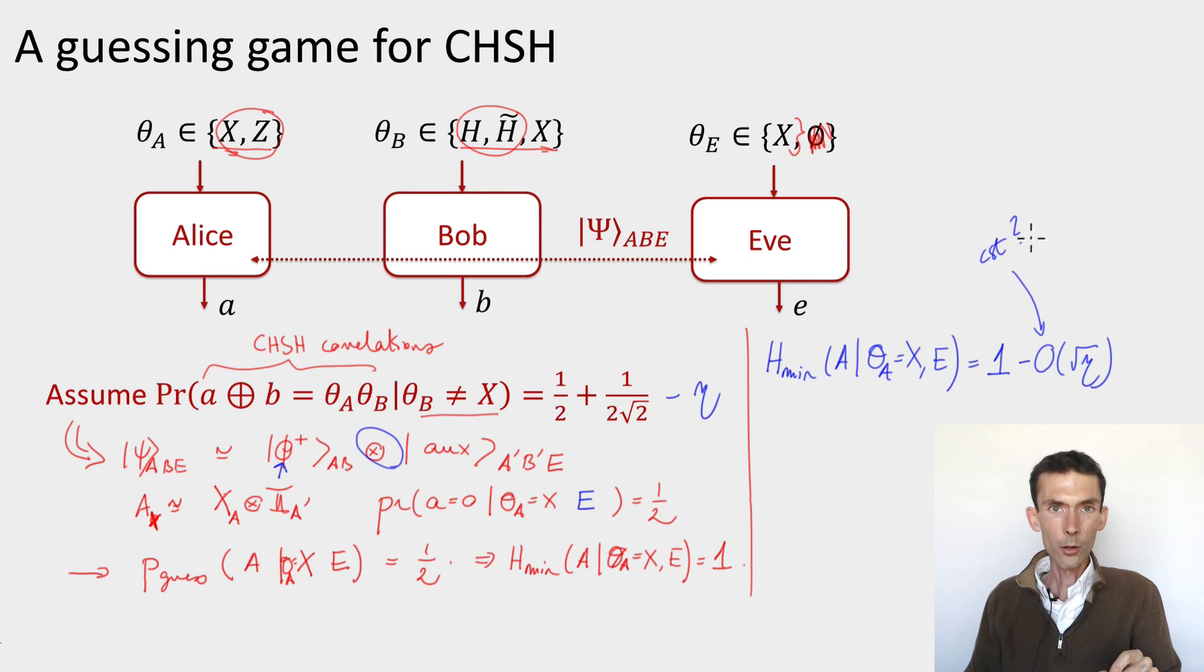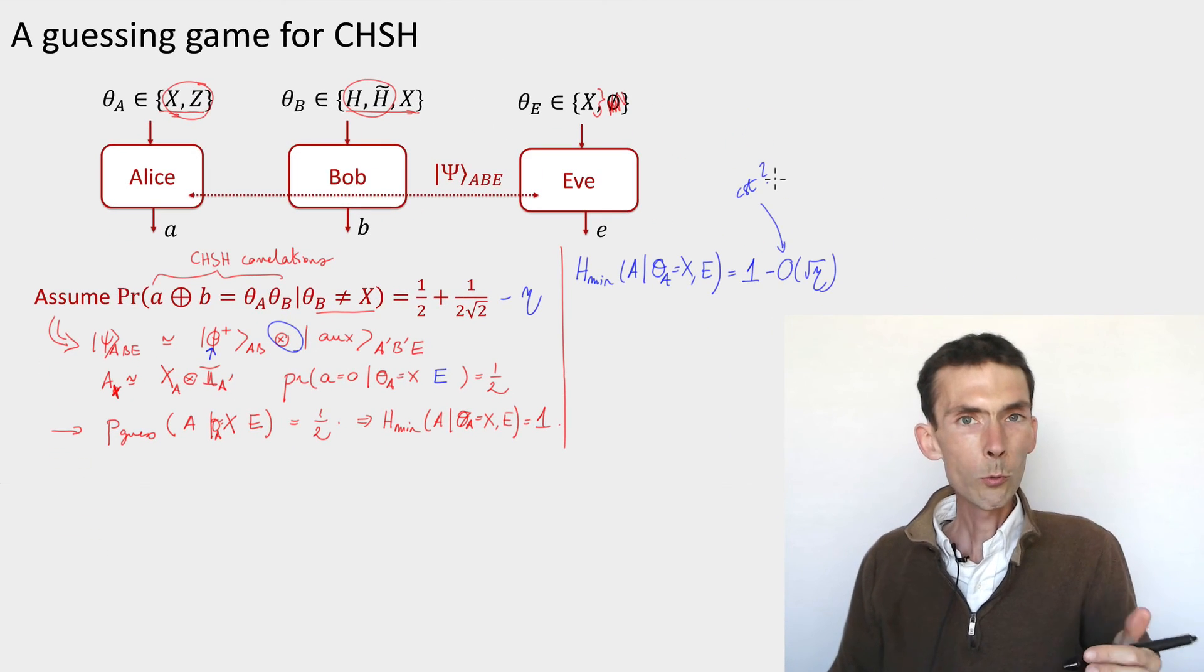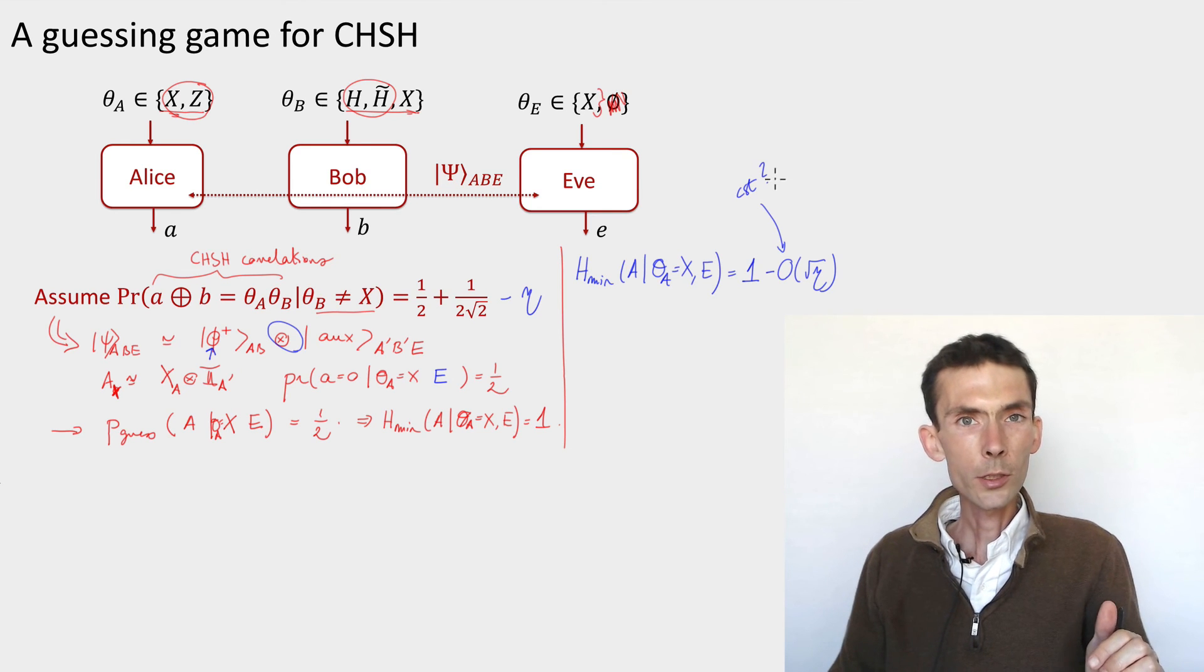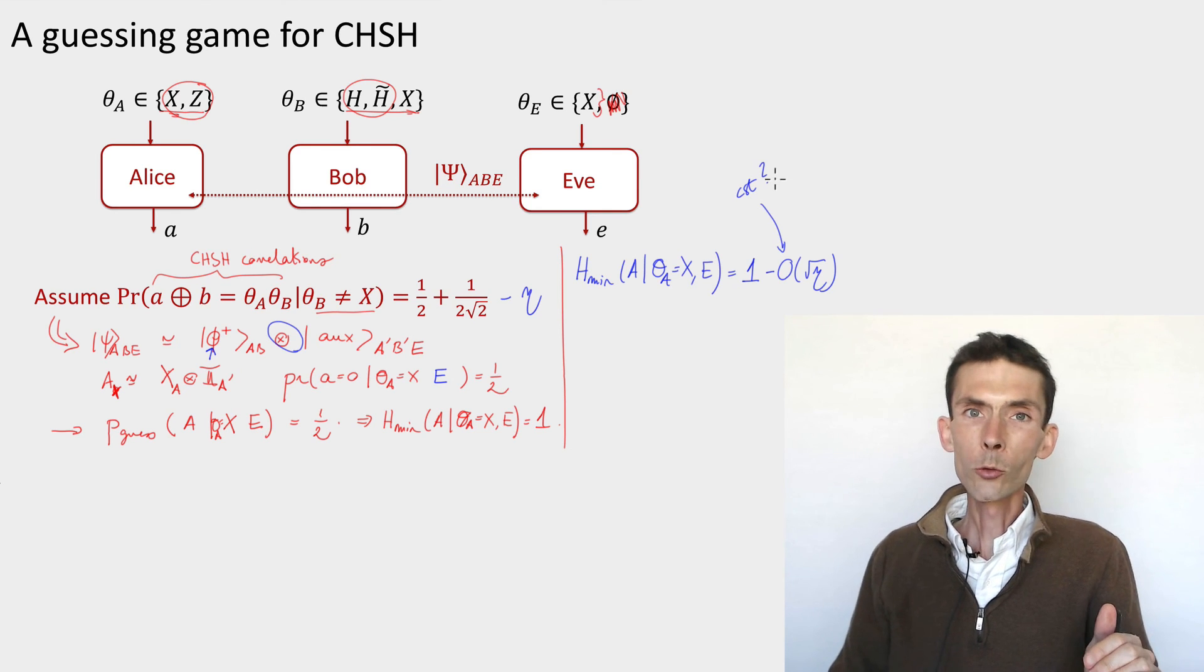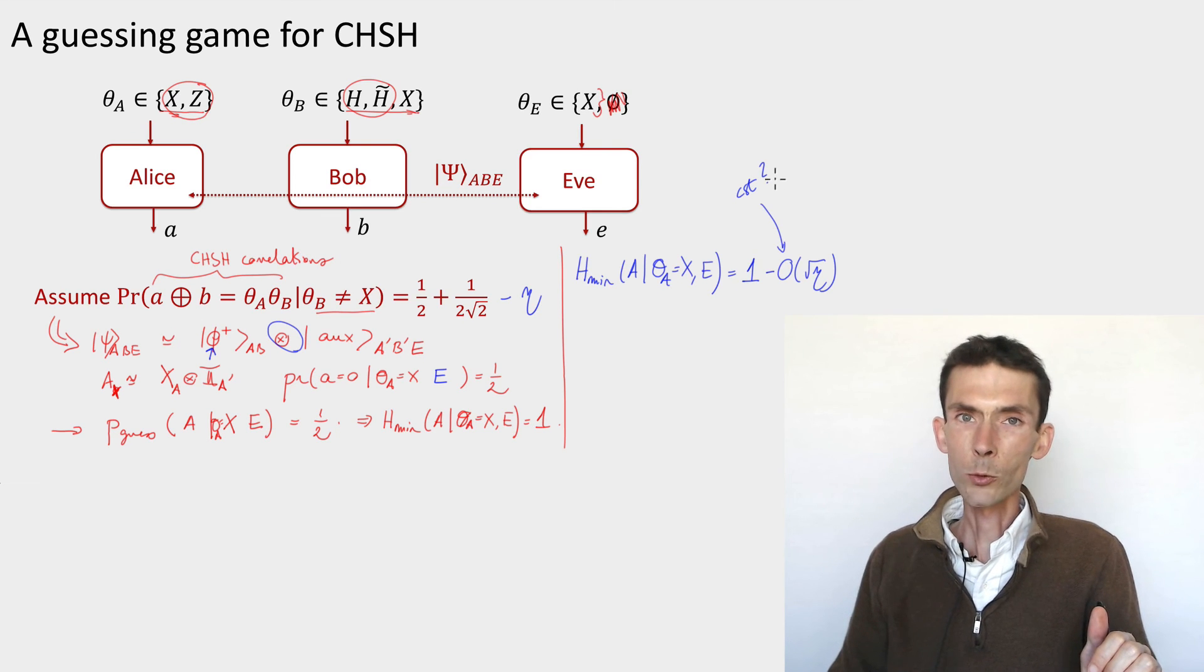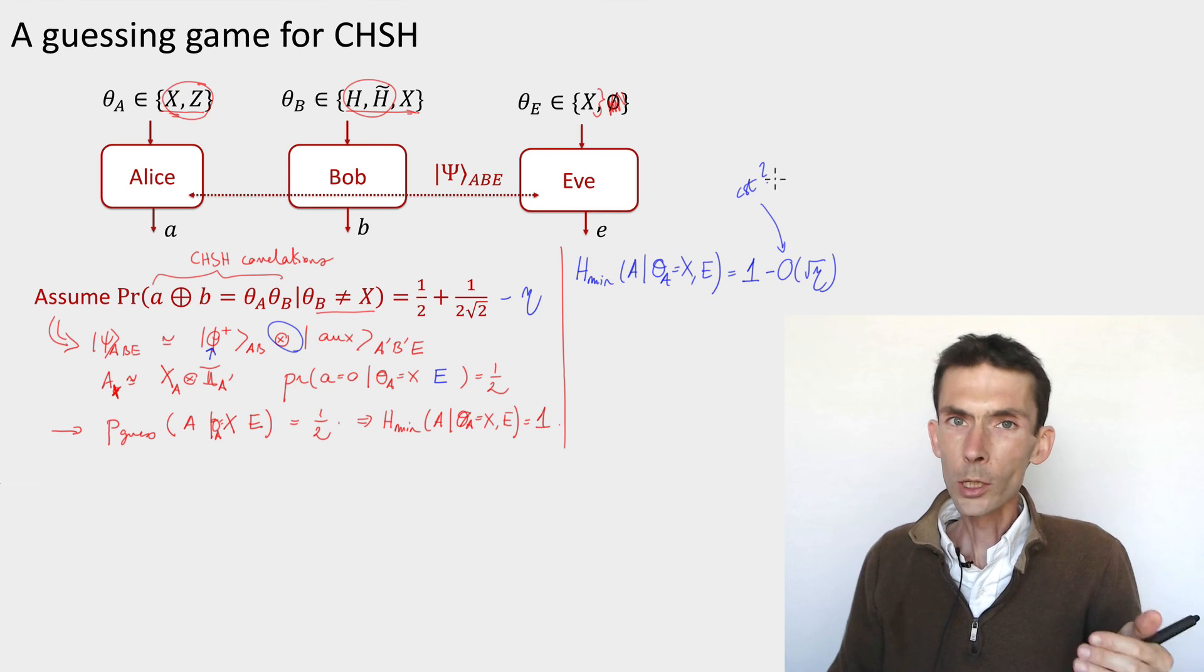What we've seen is that this variant of the tripartite guessing game lets us enforce the same conclusion as the other variant that we had seen earlier, but under weaker assumptions. Earlier, we needed to know what measurements the Alice device was performing, computational, Hadamard. Now we don't need to know this anymore. We have a little bit of a more stringent test to perform.